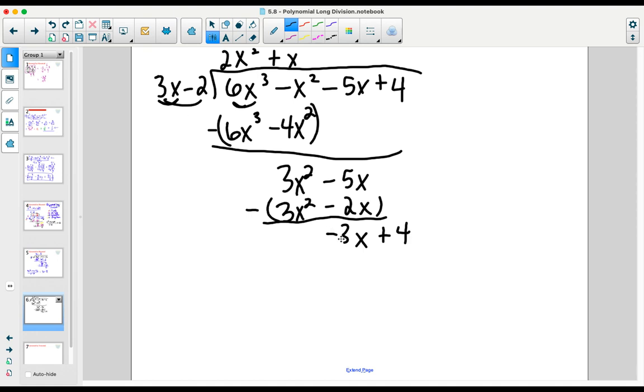3x into -3x is just -1. -1 times 3x is -3x. -1 times -2 is +2. And again, we'll subtract that line. First term will disappear. 4 - 2 leaves us with 2.